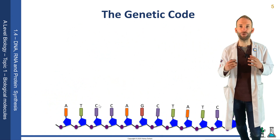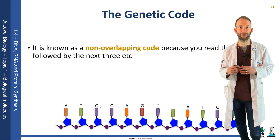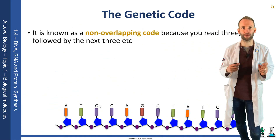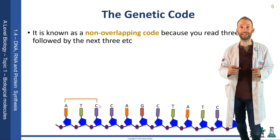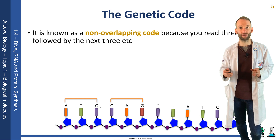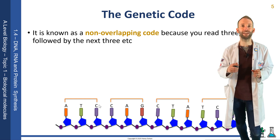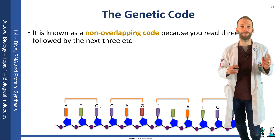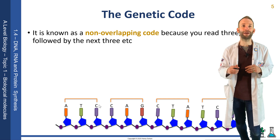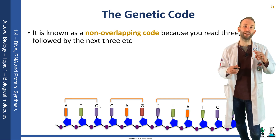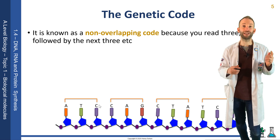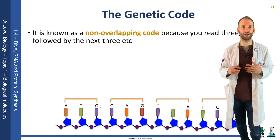Another thing about the code is it's what we call non-overlapping. This is because you read three, and then the following three, and then the following three. It was thought at one point that you'd read base one, two, and three, and then you'd read base two, three, and four, and then you'd read base three, four, and five — and so it'd be an overlapping code. But that is not how it works.